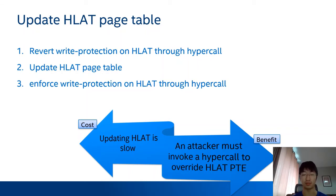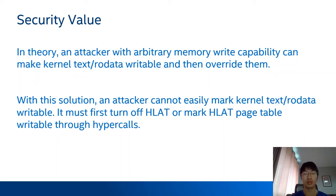As you can see, to update HLite, the guest kernel needs to make several hypercalls, so updating HLite is slower, but it brings a security benefit. Because the HLite page table is read-only in the EPT, to override a PTE in HLite, an attacker must first invoke a hypercall to reverse the read protection on the HLite page table. What's the security value of this solution? An attacker with arbitrary memory write capability can try to override the page table to make kernel text and rodata writable. If this solution is deployed in the Linux kernel, overriding the CR3 page table cannot redirect translations for kernel text and rodata, and overriding the HLite page table is much harder because it is read-only in the EPT most of the time.